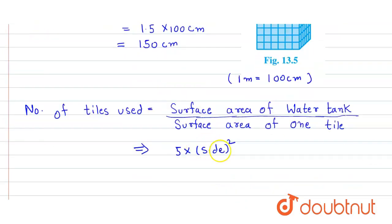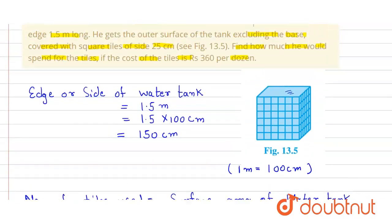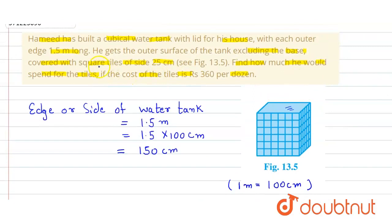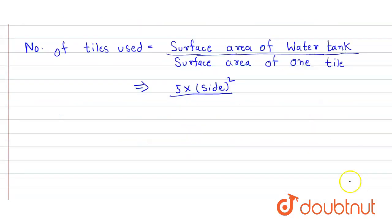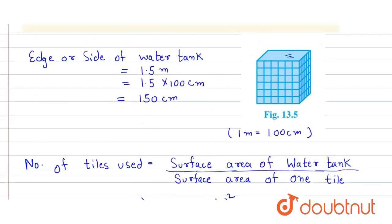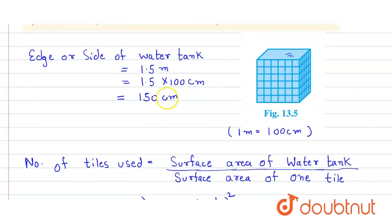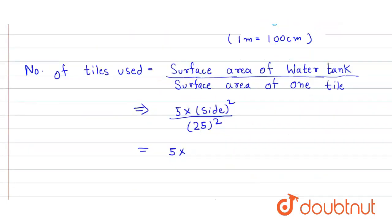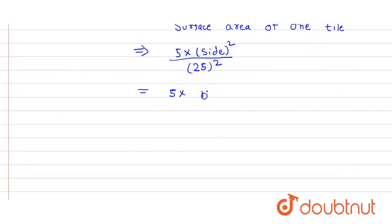So here we get 5 times side squared divided by surface area of one tile. The tile is square so its surface area equals side squared. Here side is 25, so we write 25 squared. So that will be 5 times the side of the water tank, which is 150 centimeters.